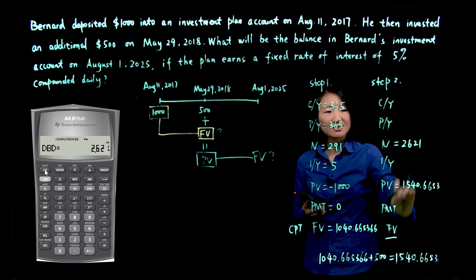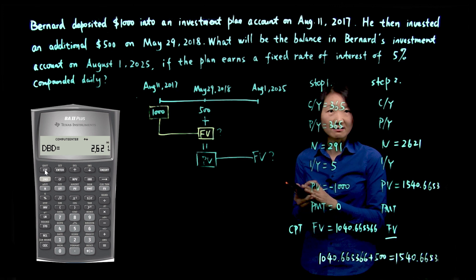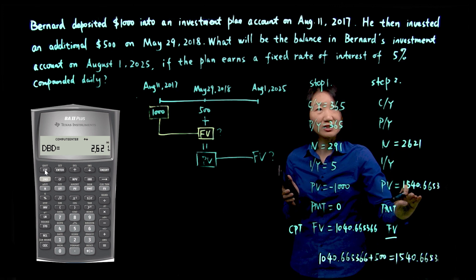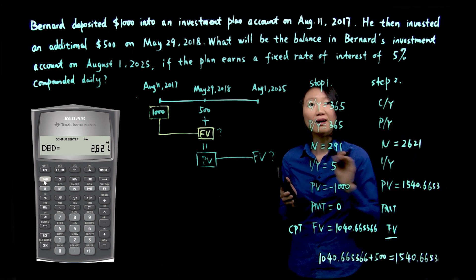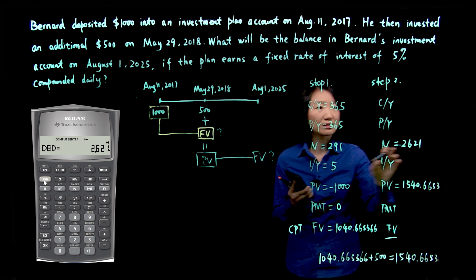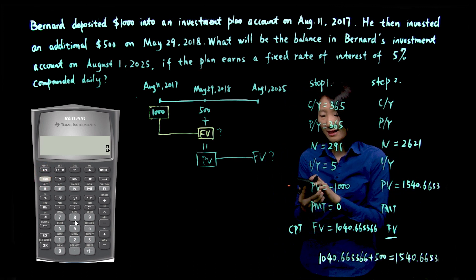Now you see all that information hasn't changed. I can just enter the new information, and the rest are already stored on the calculator. So I'll override N. So second, quit, I'll get out of the date function.